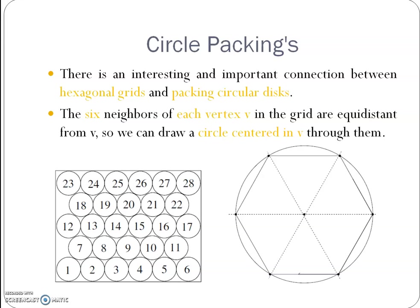The next concept is circular packing. Circular packing deals with a grid. There is an interesting and important connection between hexagonal grids and packing circular disks. In hexagonal grids, the six adjacent hexagonal grids are connected, and the six neighbors of each vertex v in the grid are equidistant from v, so we can draw a circle centered at v through them.